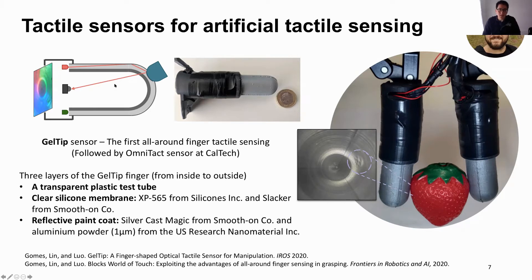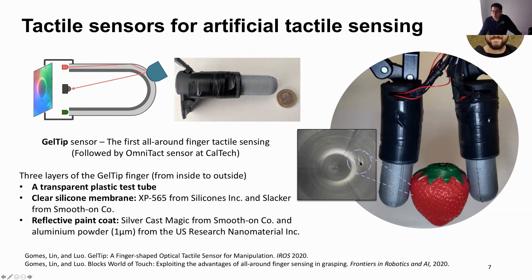The sensor has three layers: the tactile tube, the clear silicone membrane, and a reflective paint coat. Here is the prototype we have built, attached to robotic grippers. When we have a strawberry in the grippers, we can sense the texture of the strawberry through the tactile sensors.